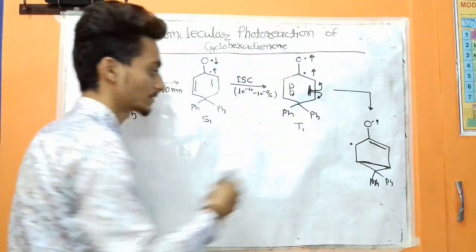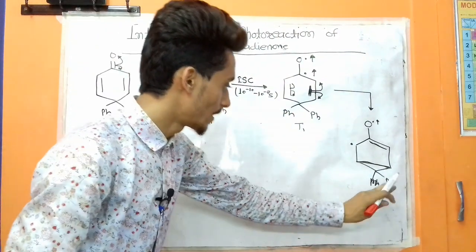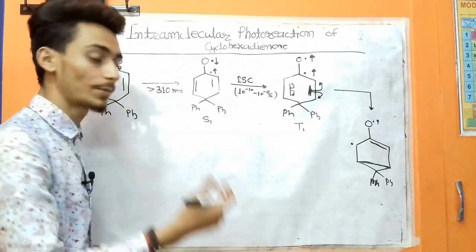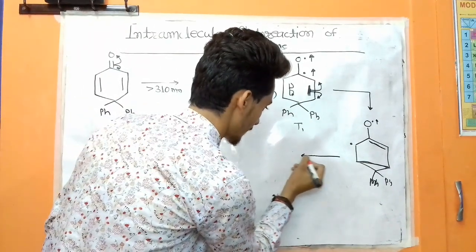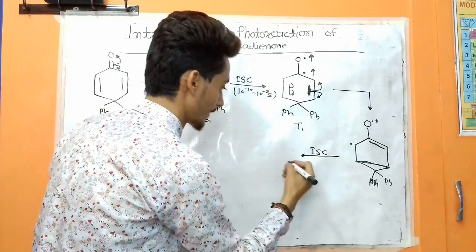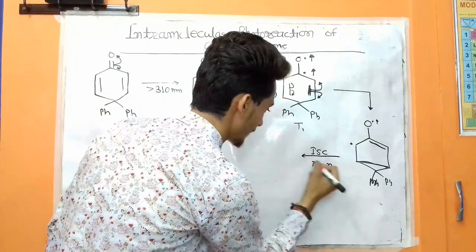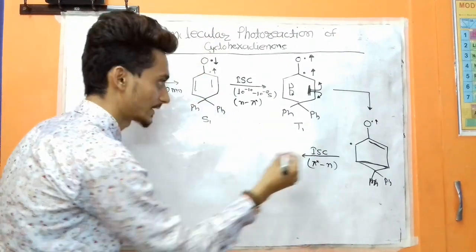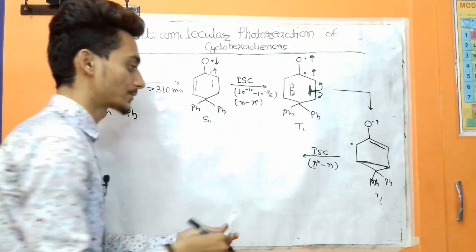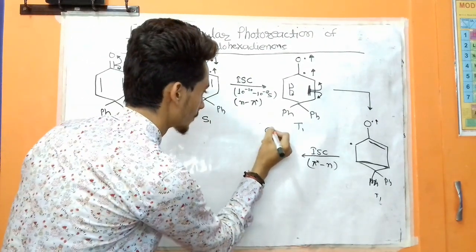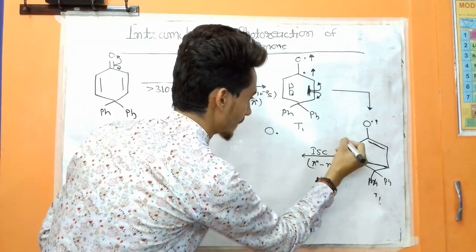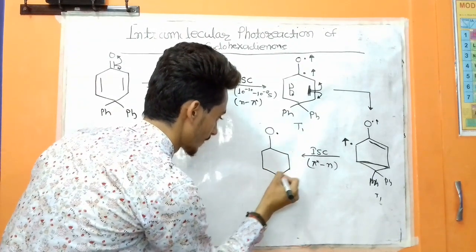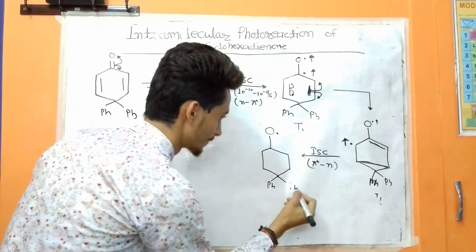The triplet state drops to the singlet state, and a zwitterion is formed — this is internal system crossing. Now π* to n and n to π* transitions are taking place. The triplet drops to the singlet state, and spin conversion occurs. There is an oxygen with a lone group, and spin inversion takes place.